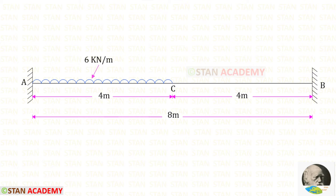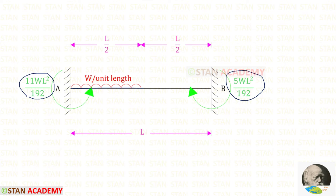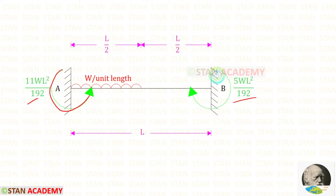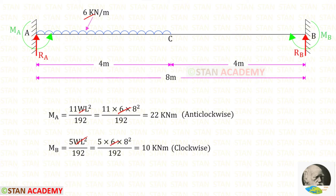For that we can use formulas. If the fixed beam is subjected to a uniformly distributed load for the left half span, the formula to find the fixed end moment at point A is 11WL² upon 192, and at point B is 5WL² upon 192. MA will be acting in the anticlockwise direction and MB will be acting in the clockwise direction. Applying the values W = 6 and L = 8, for MA we get 22 kNm and for MB we get 10 kNm.